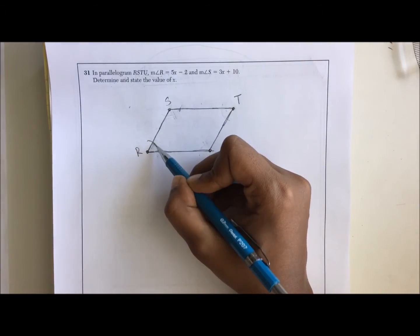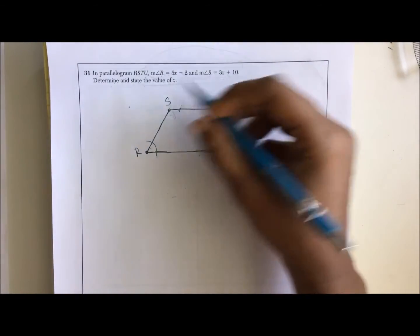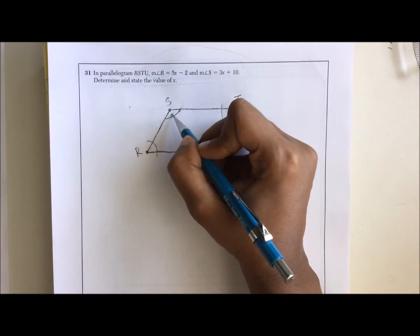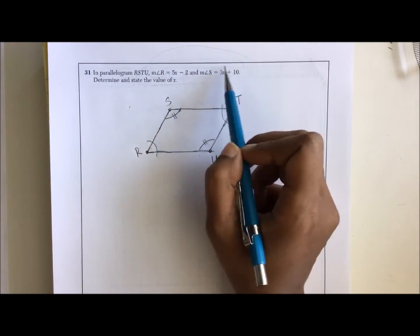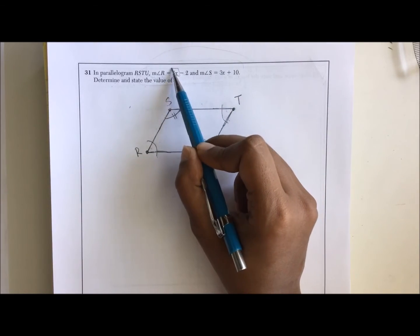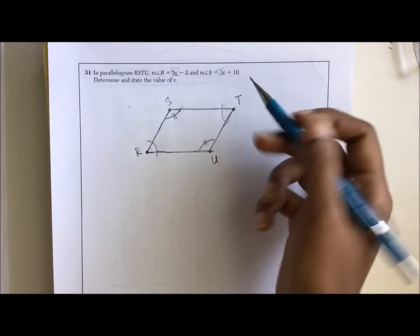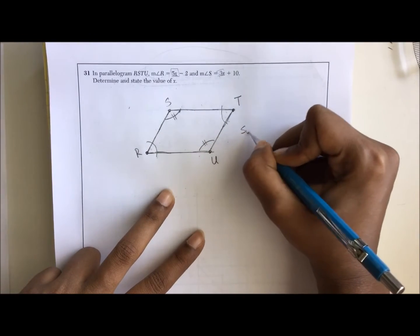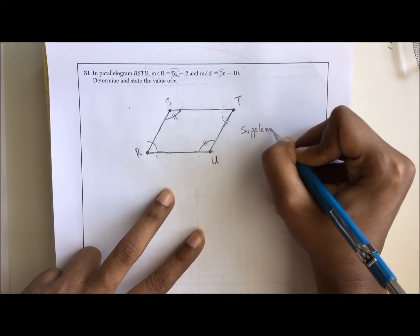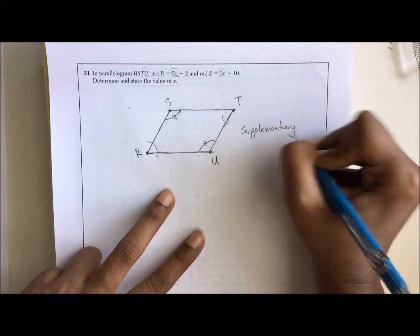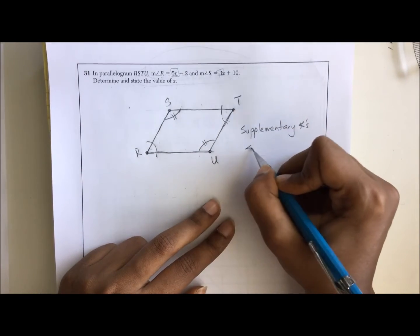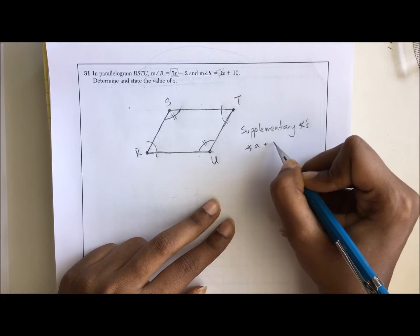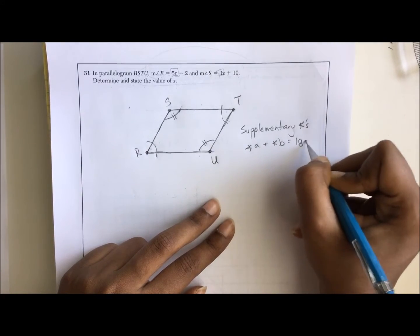And this is going to be helpful for us because if we know that these consecutive angles are supplementary, then it helps us put together an equation that can help us figure out what the value of x is going to be. So what does it mean to be supplementary? Supplementary angles are when two angles are put together or summed to give you 180 degrees.